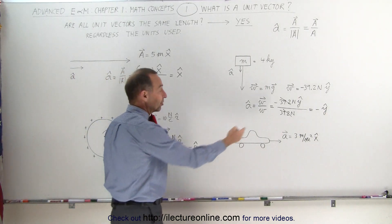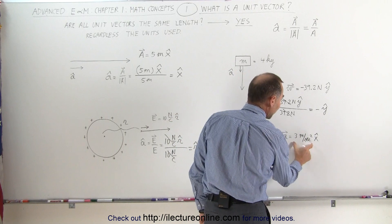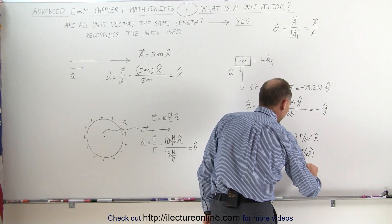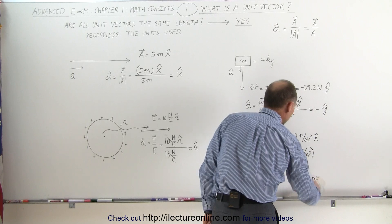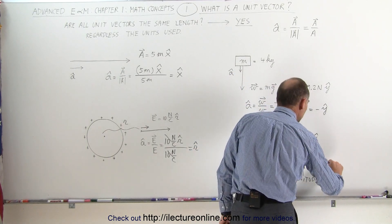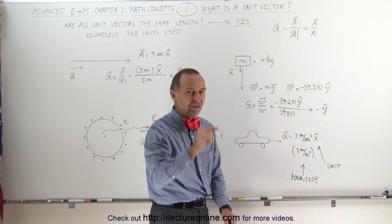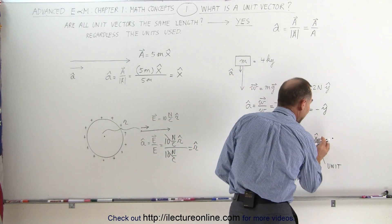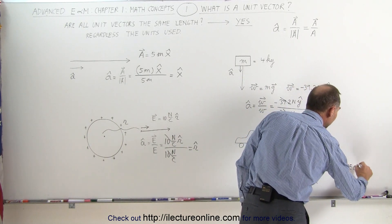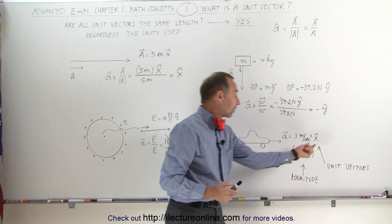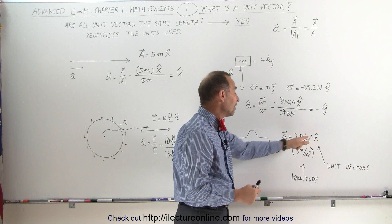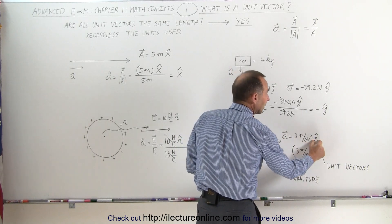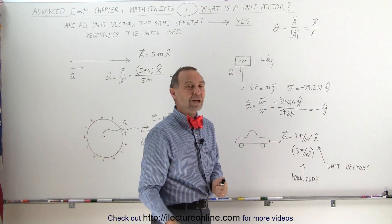In classical mechanics, when we talk about a car accelerating at 3 meters per second squared, the 3 meters per second squared is the magnitude of the vector. The x-hat — or i, j, k notation — is the unit vector. These symbols, x, y, z with a circumflex over them, or sometimes i, j, and k, are all called unit vectors. Any vector is essentially a unit vector — which gives the direction — multiplied by its magnitude. The magnitude tells you how large, and the unit vector simply gives you the direction.